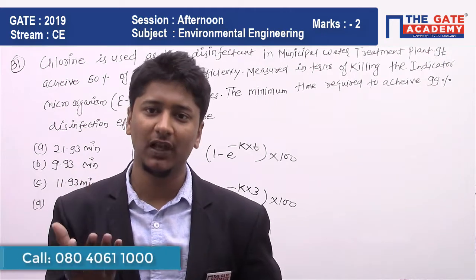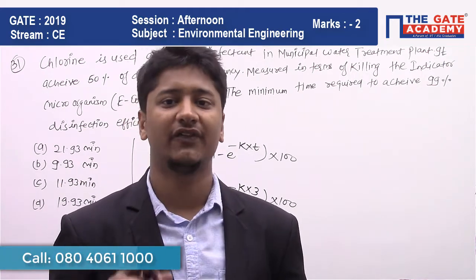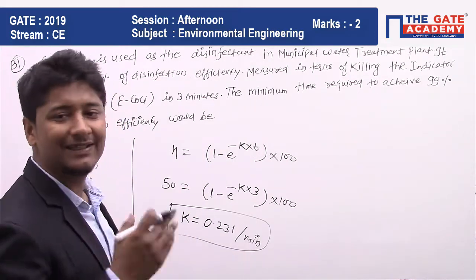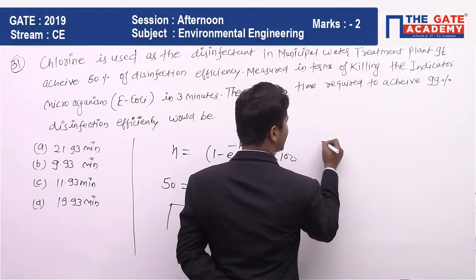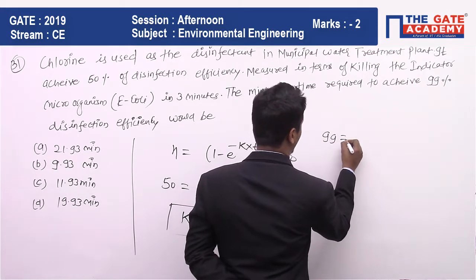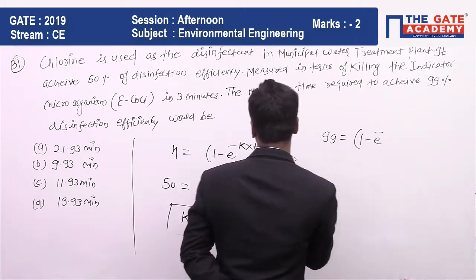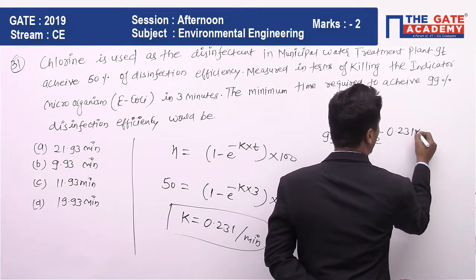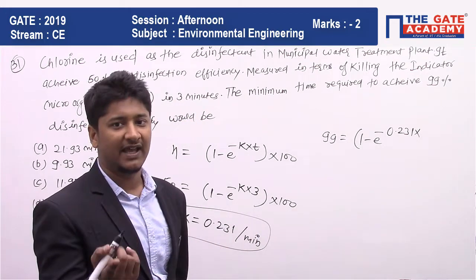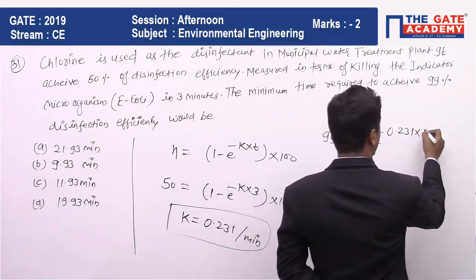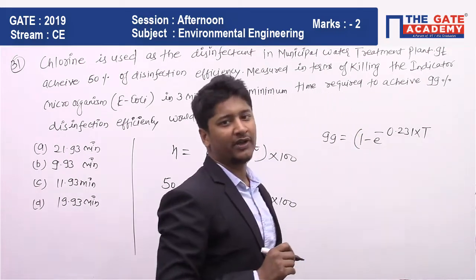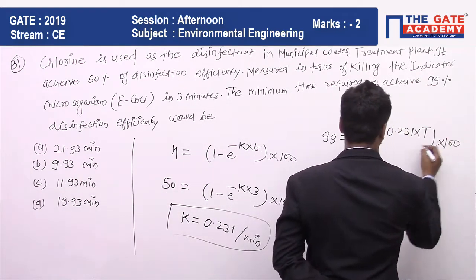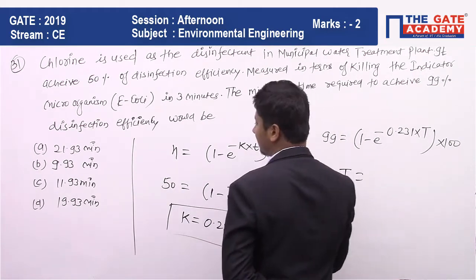Now, for any percentage efficiency we can find the corresponding time. For 99% efficiency: 99 = (1 − e^(−0.231 × T)) × 100, where T is the unknown time we need to find. We substitute K = 0.231 into the equation and solve for T.